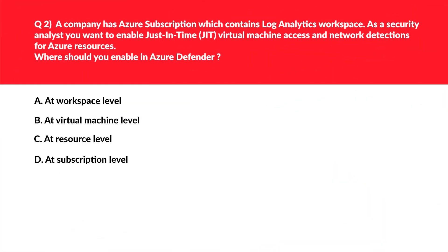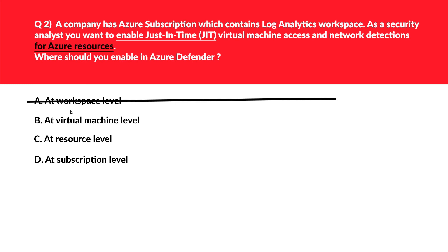This question will test your concepts on JIT. Let's first look at option A, that is at workspace level. Enabling Azure Defender at workspace level doesn't enable JIT or Just-In-Time. Therefore it's an incorrect choice. Let's now look at option B, at virtual machine level. Just enabling Azure Defender won't enable JIT for all Azure resources as required by the question. Therefore it's again an incorrect choice.